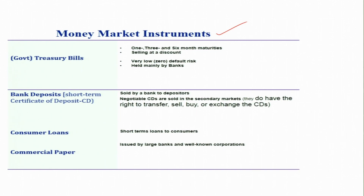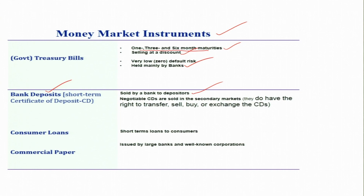Treasury bills are one money market instrument, issued by governments with one-month, three-month, and six-month maturities. These are often sold at a discount. A key advantage is very low or nearly zero default risk for well-performing governments, and they are most often held by banks. Another money market instrument is bank deposits — short-term certificates of deposit sold by banks to depositors. Negotiable certificates of deposit can also be sold in the secondary market.